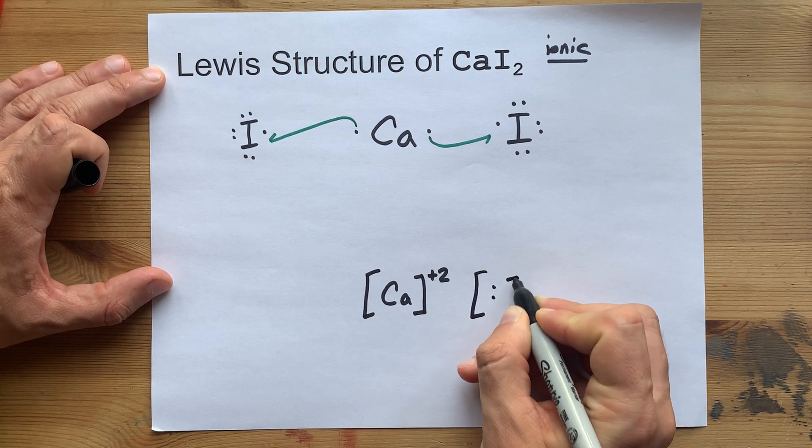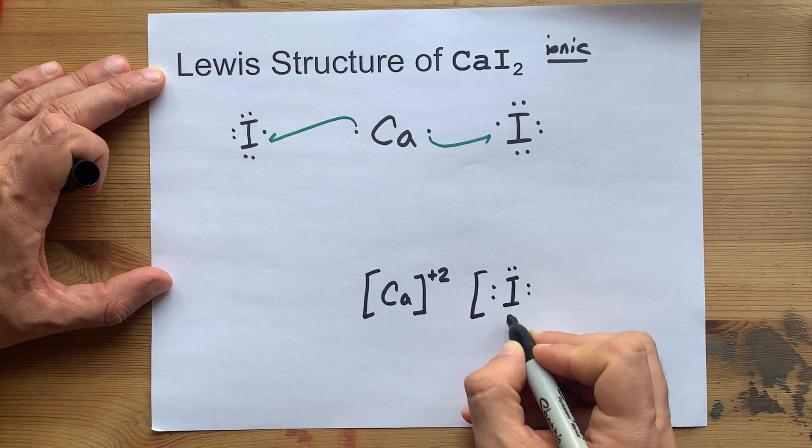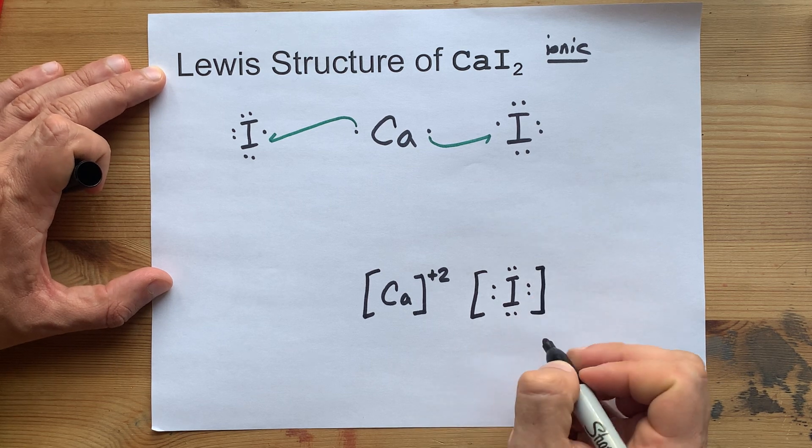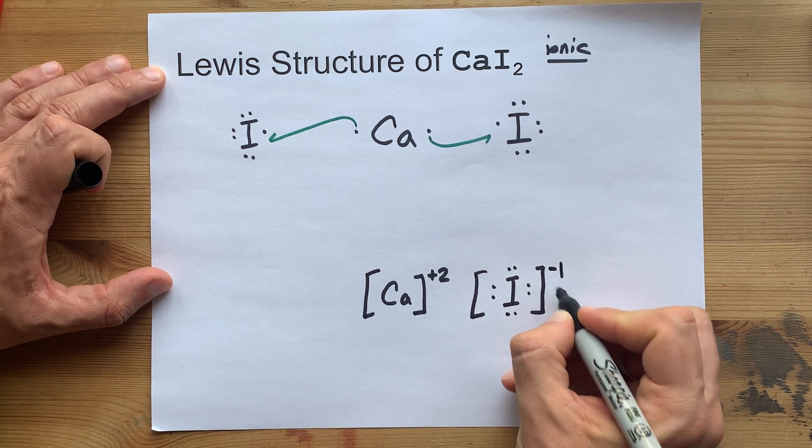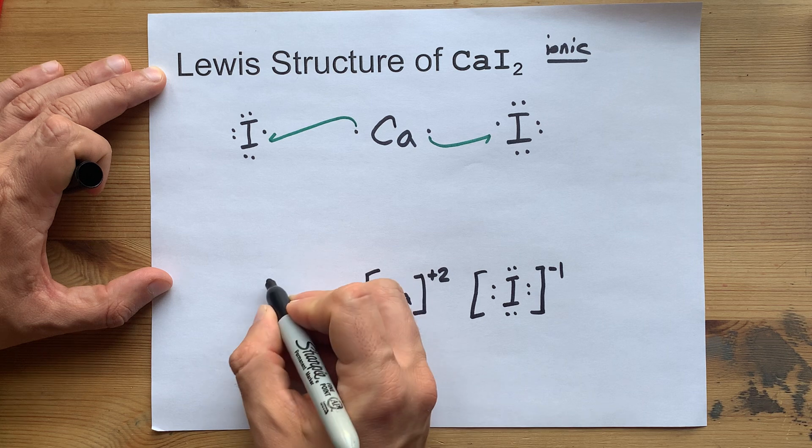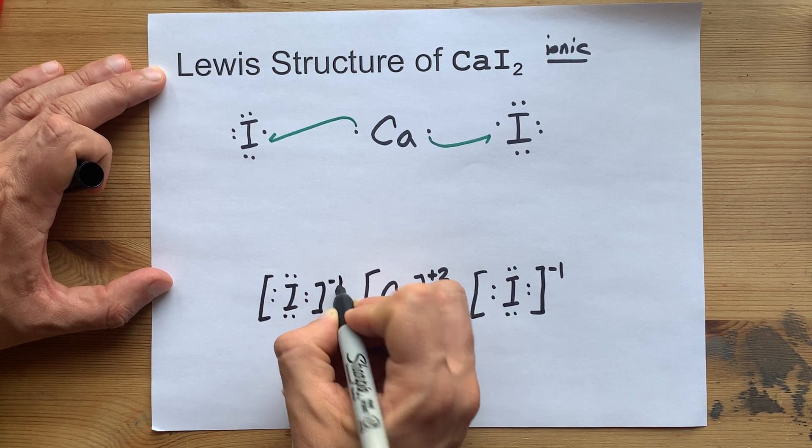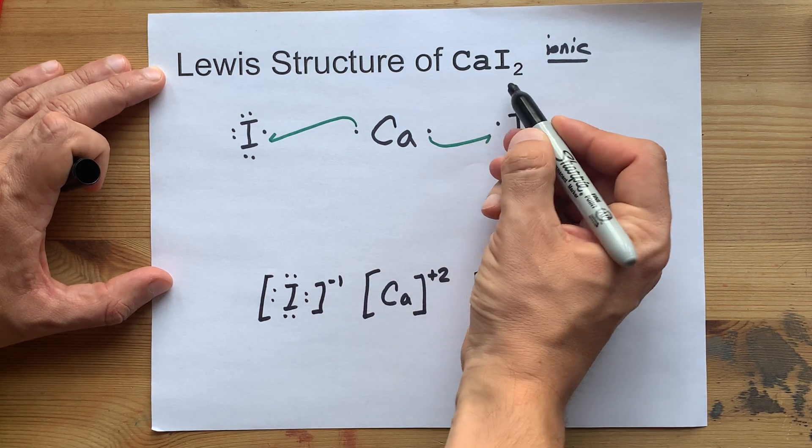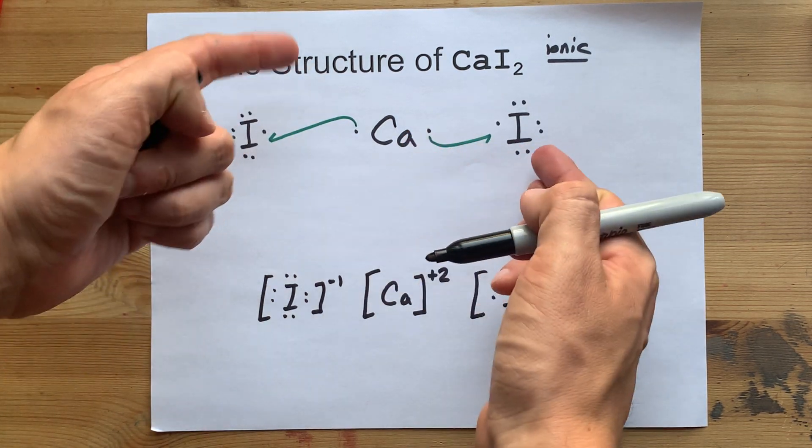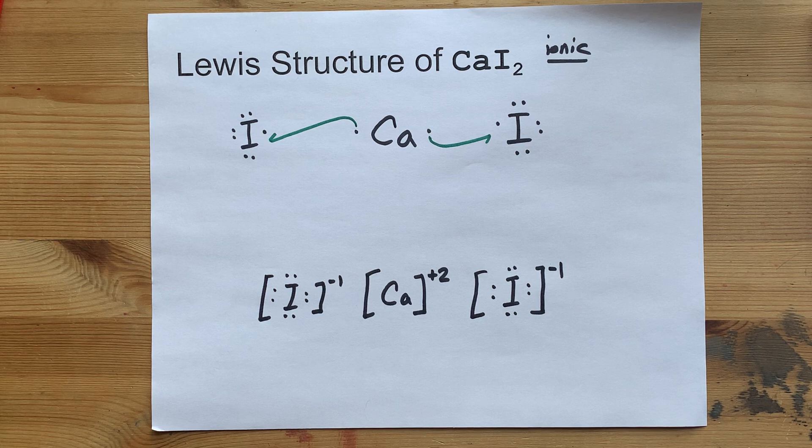The iodines are now surrounded by eight electrons each. That's one more than they started with, so it's a minus one charge. And you probably have to write it out a second time, because there's two of them. See, CaI2, and you needed two iodines to accept both of those electrons.